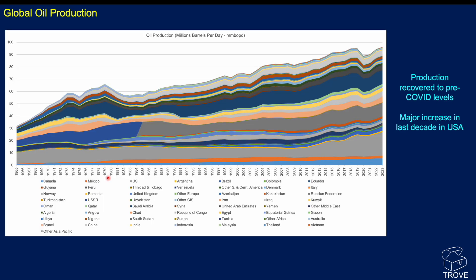Now let's move on to global oil production. On this graph showing every country, the bizarre change here is the USSR becoming the Russian Federation — it looks like a clean break, very different to the reserves picture, but production didn't double overnight. Back in 1965 the world was producing about 30-something million barrels of oil per day. It's gone up consistently since, there's the COVID dip, and we're just now passing pre-COVID production levels — and it's still rising.